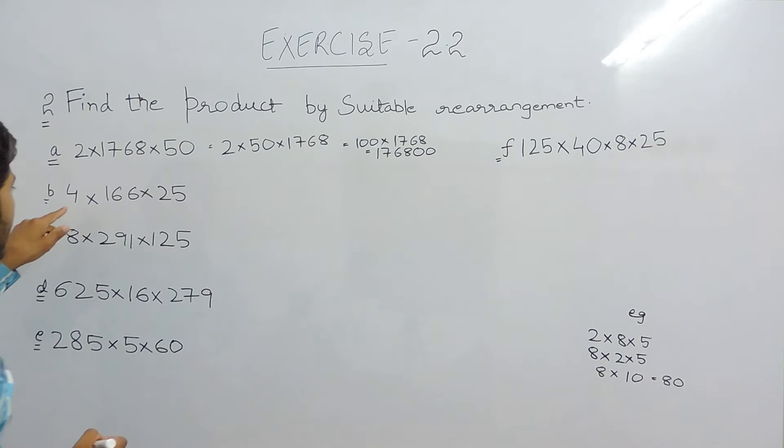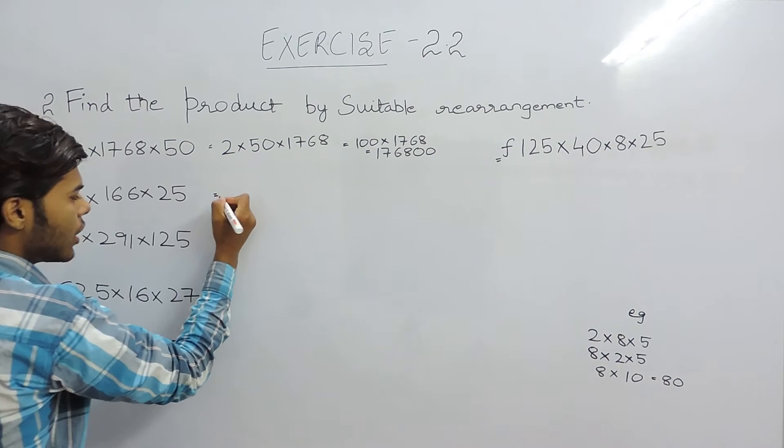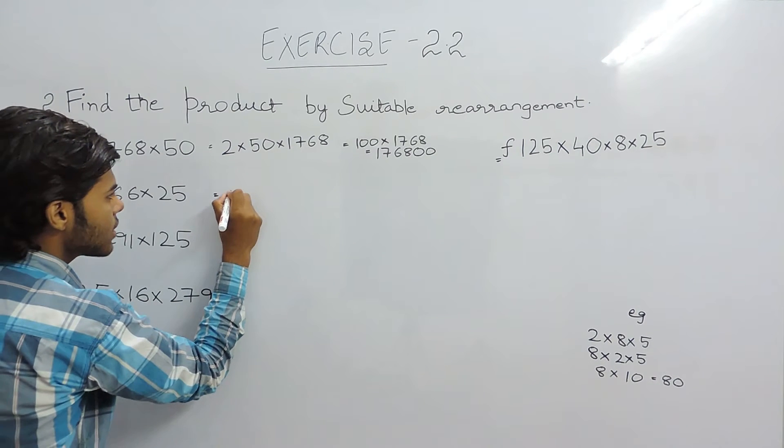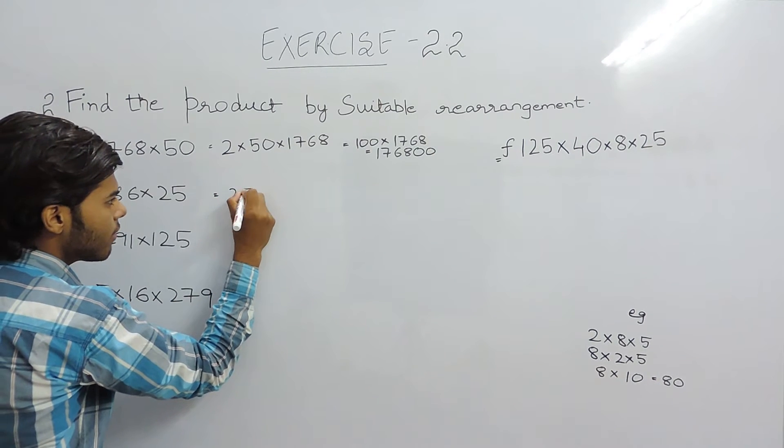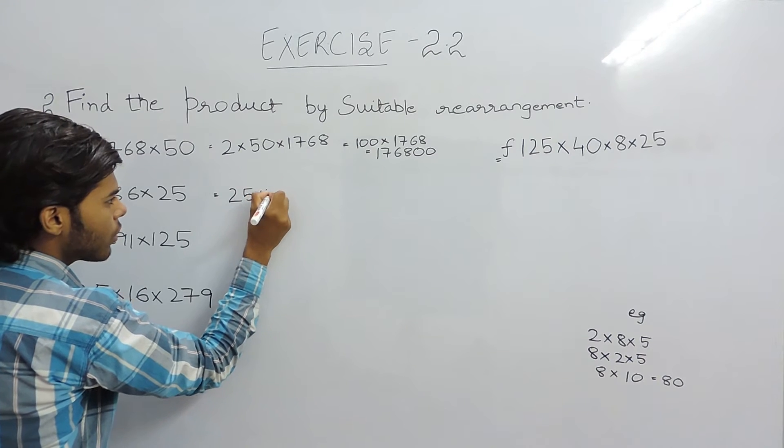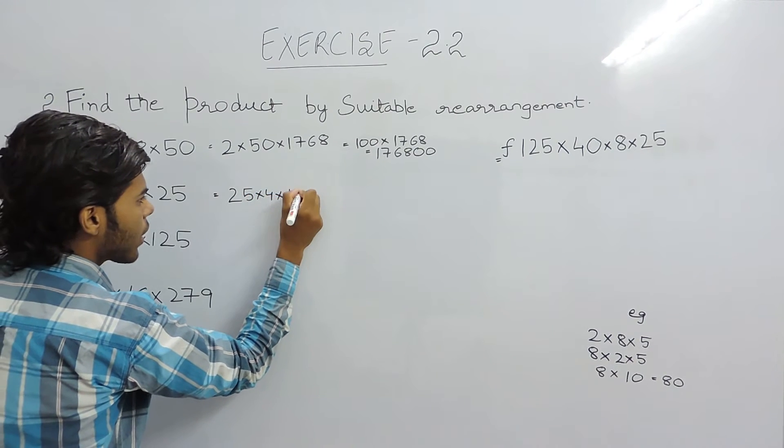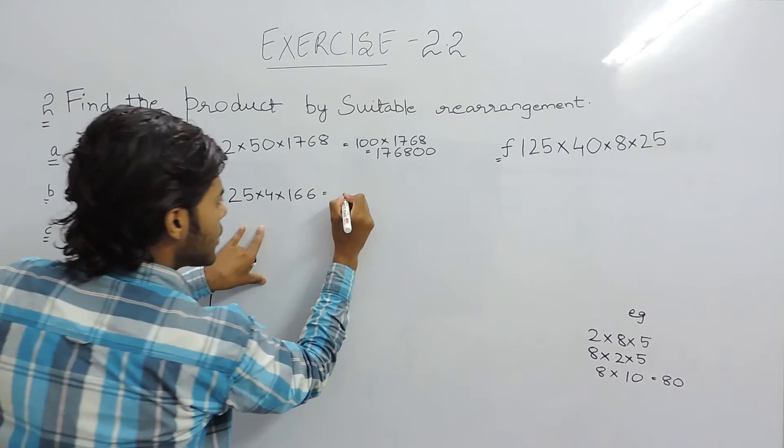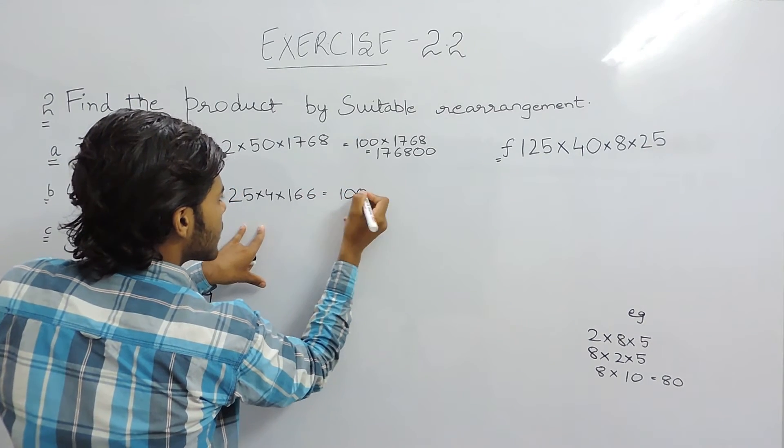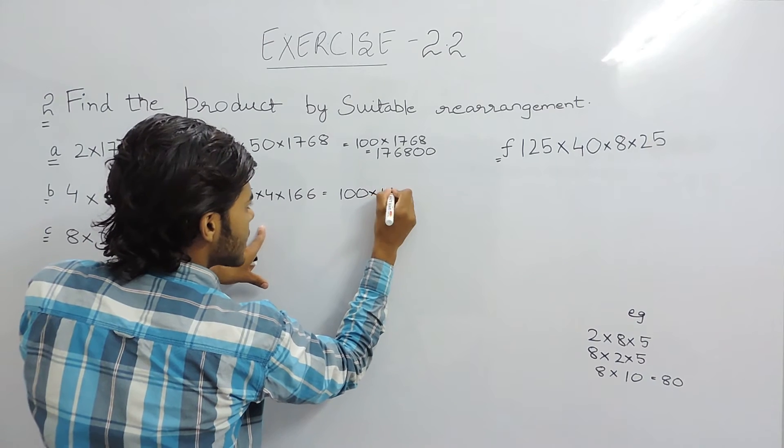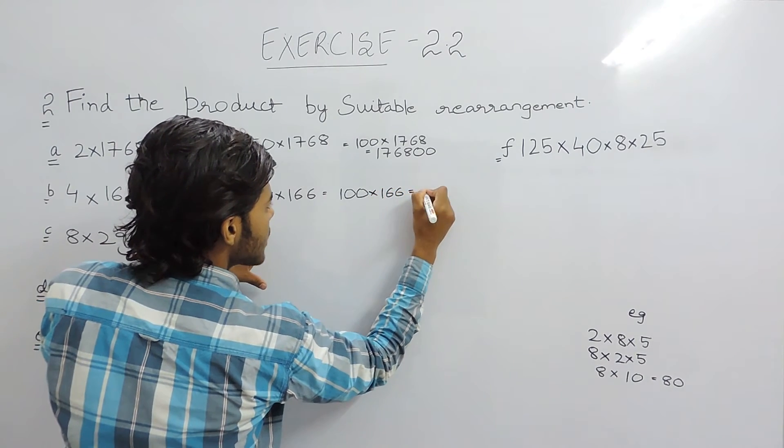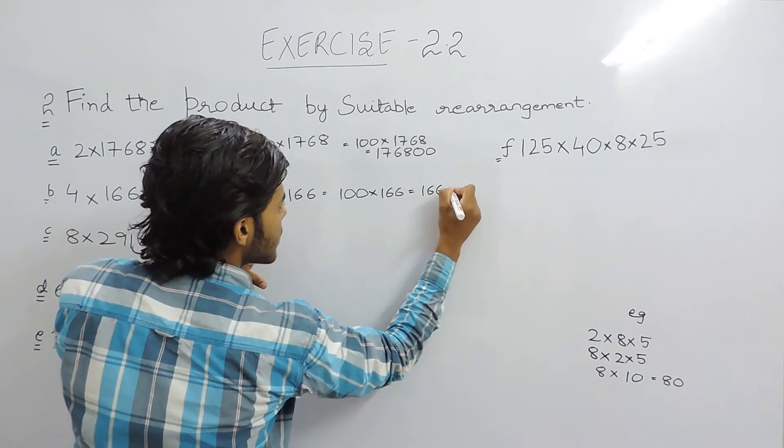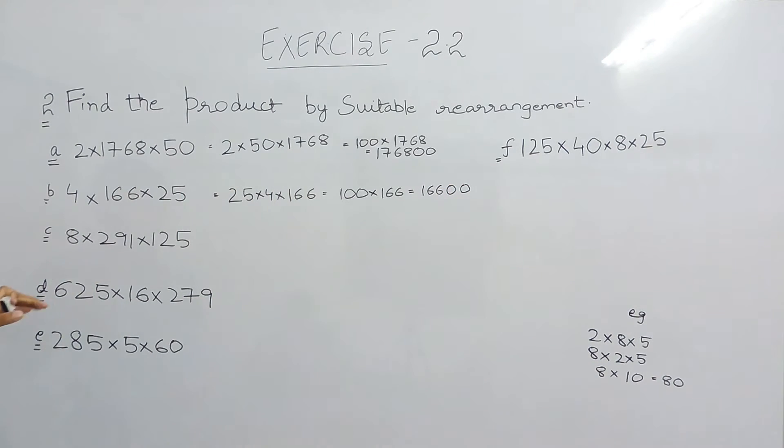In the second part it is 4 into 166 into 25. So you must be knowing the tables, that is we should write it like 25 into 4 into 166. So 25 four's are 100 into 166. That gives us 16600. So this is the second answer.